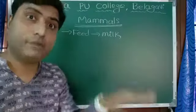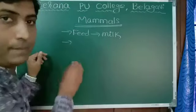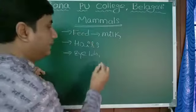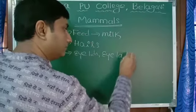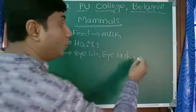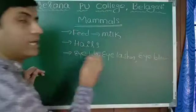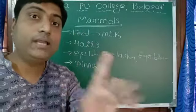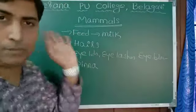Mammals have characters entirely different from others. Their body is covered with hair, which we generally don't find in any other group. They also have eyelids, eyelashes, and eyebrows. External pinna is present — that is the external ear — and it is present only in mammals; we don't find it in any other group.